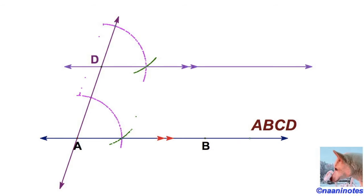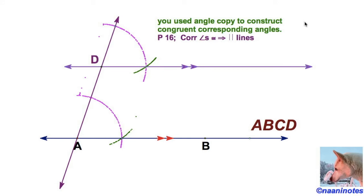The way this works is that we're making corresponding angles here. We used angle copy procedure. We constructed these two angles to be congruent and they're corresponding. Back in chapter three, remember postulate 16: corresponding angles are congruent, then the lines are parallel.